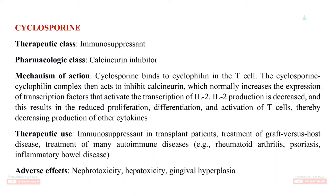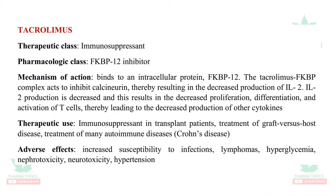Cyclosporine is a calcineurin inhibitor. It reduces the production of IL-2 by binding to a protein called calcineurin, which decreases the multiplication, differentiation, and activation of T-cells, thereby decreasing the production of other cytokines. It is used in transplant patients, treatment of graft versus host disease, and autoimmune diseases such as rheumatoid arthritis, psoriasis, and inflammatory bowel disease. Adverse effects include nephrotoxicity, hepatotoxicity, and gingival hyperplasia.